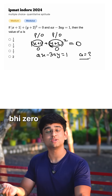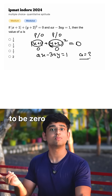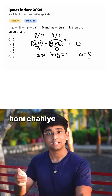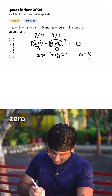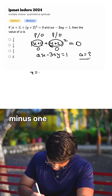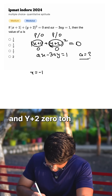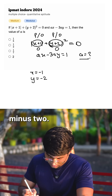So x plus 1 equals 0 and y plus 2 equals 0, then 0 plus 0 will become 0. So if x plus 1 is 0, then x will become minus 1, and if y plus 2 is 0, then y will become minus 2.